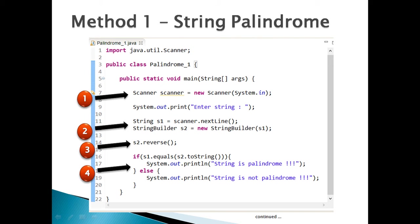Moving ahead, prompt the user to enter a string for which palindrome checking is to be done: System.out.print("Enter a string"). Step 2: create a String variable s1 and assign it a value by using the Scanner instance to call the nextLine() method. This method takes in the user input from the console as a String value and assigns it to s1.